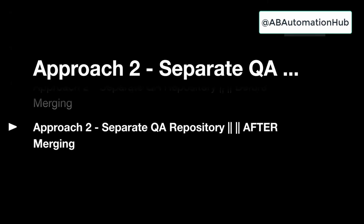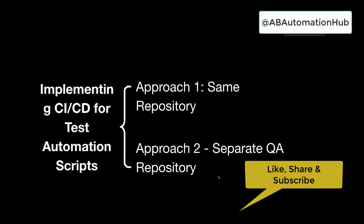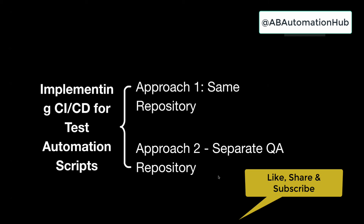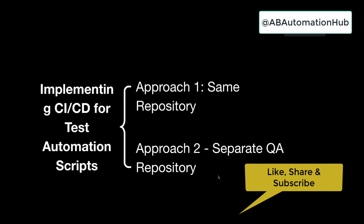So these are the two different approaches, both with different sub-approaches. I hope you get the idea of how to implement CI/CD for your test automation script. The most common approach is to merge your code into master and then trigger your automation test cases. In the next video, we'll see how to trigger this from GitHub — a live demo creating two repos, one dev repo and one QA repo, in a real-time scenario. Please like, share, and subscribe. If you're following the same approach or a different one, let me know in the comment box — we'd be interested to know what approach you're following in your organization. Thank you for watching.